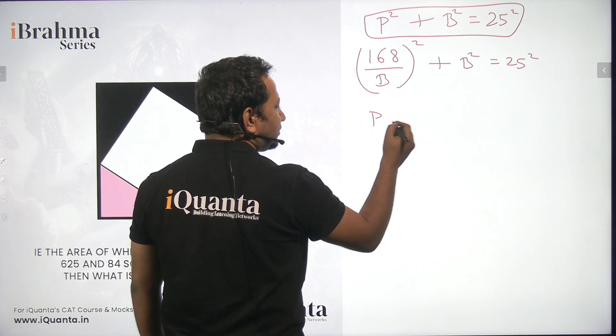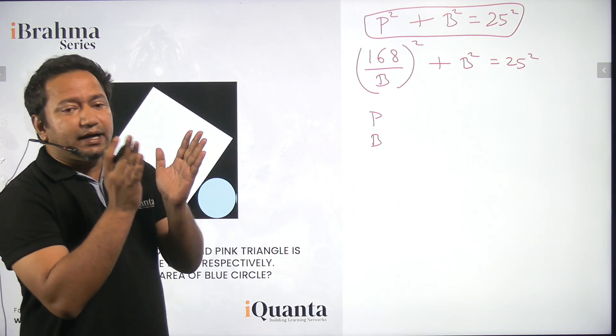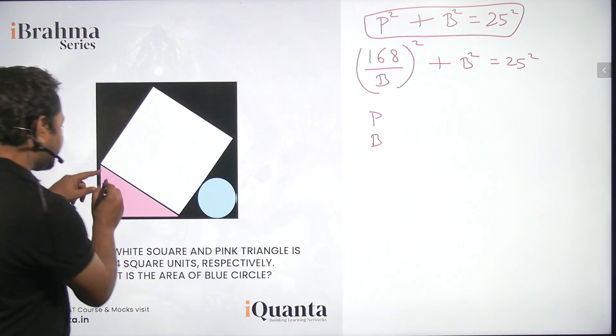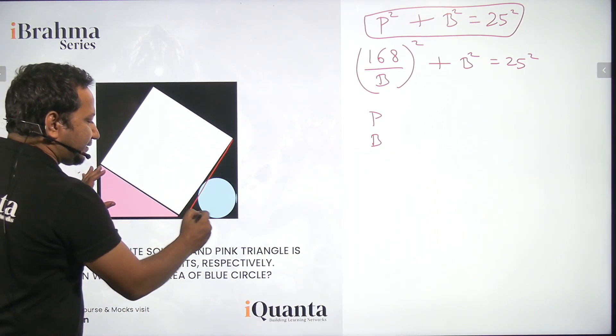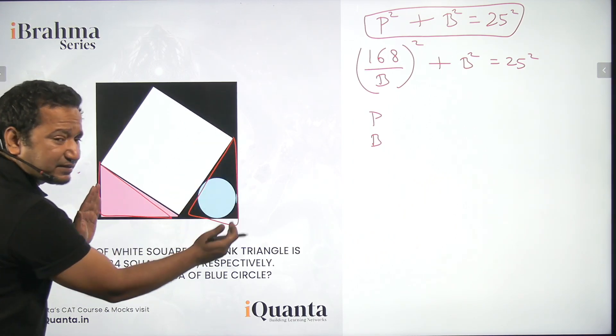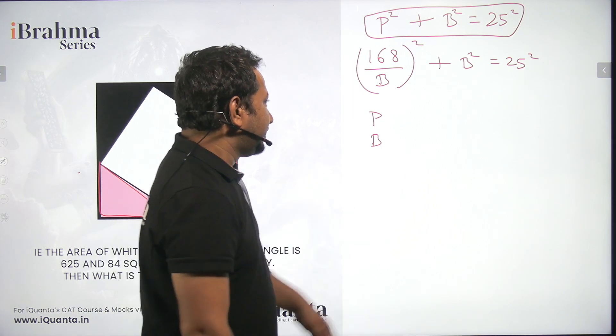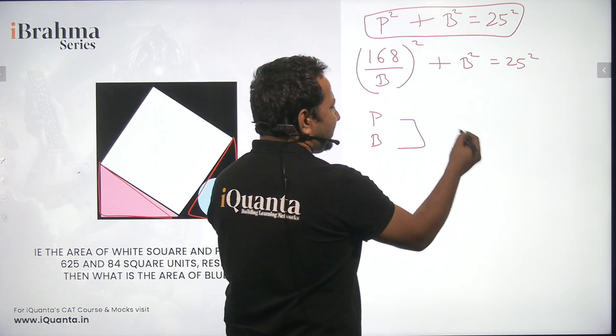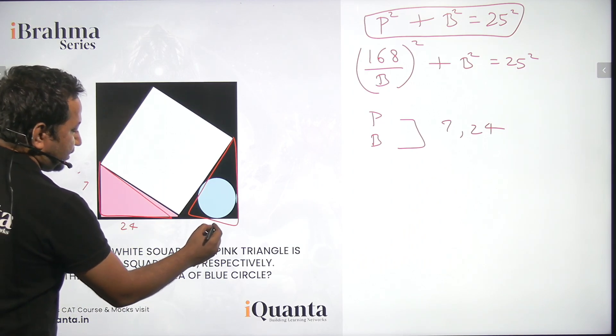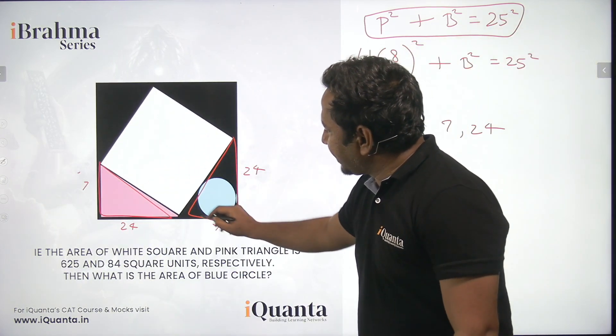So P and B, the values will be... See the thing is, you'll get two values of B. And one will be the perpendicular, other will be base because P and B can be interchanged. It depends on how you look at the triangle. For example, this pink triangle is same as this black triangle. The only difference is that this triangle, the longer side is horizontal, here the longer side is vertical. So basically, you find two values of B, one will be P, another will be B. So once you try to solve this, you will get two values as 7 and 24. So looking at the figure, we can say this is 7, this is 24. Similarly, this will be 7 and this will be 24. Now we have obtained the sides of the triangle, the black triangle.